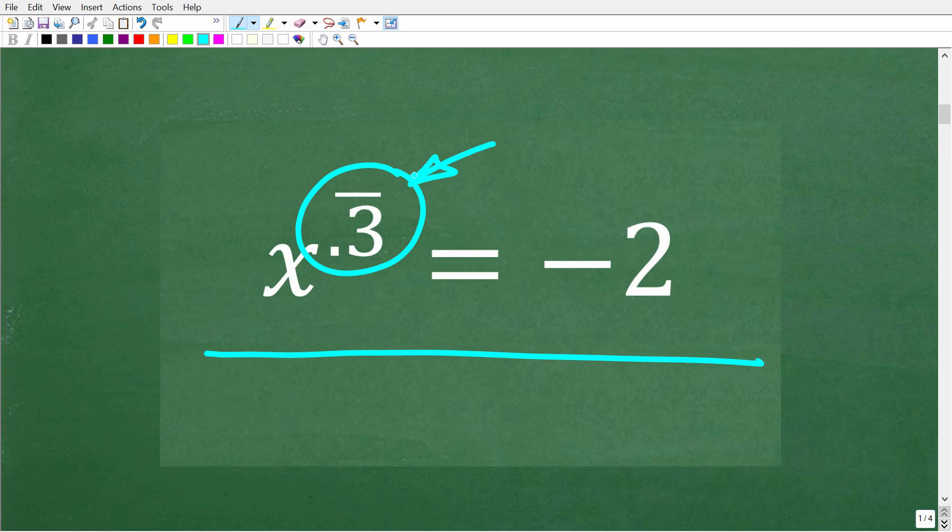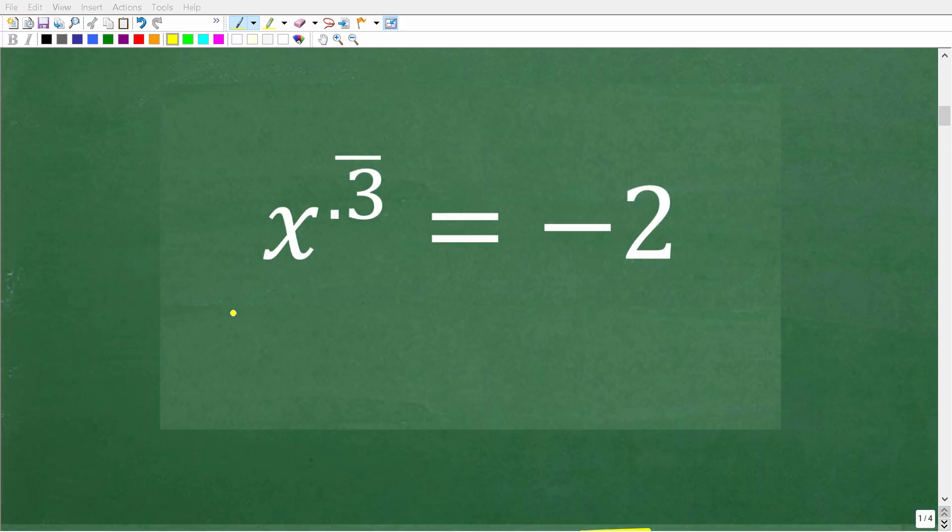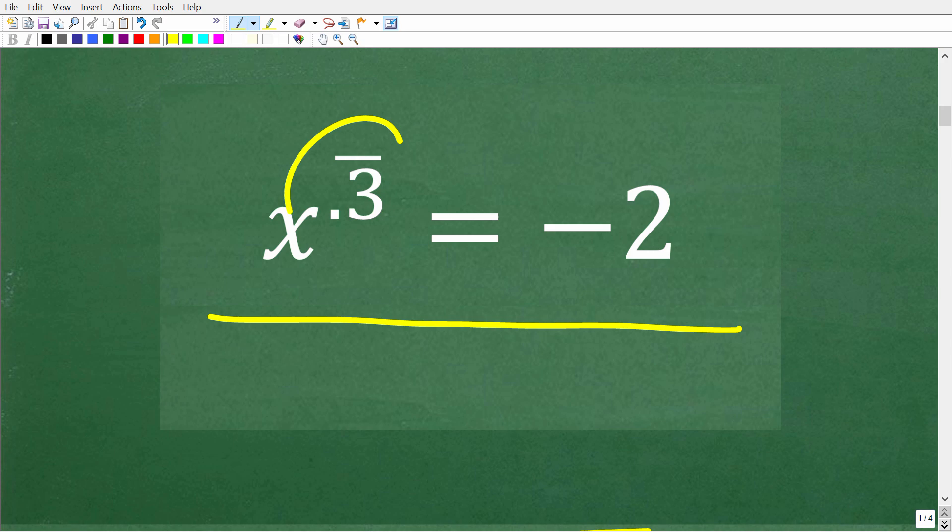All right, so let's go ahead and get into this right now. Okay, so once again, the confusing part about this equation for most people is this right here. So we have x to the 0.3 with this little bar over it. So what does this mean in mathematics?